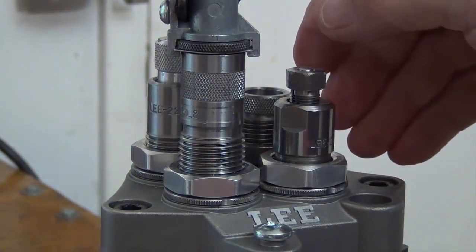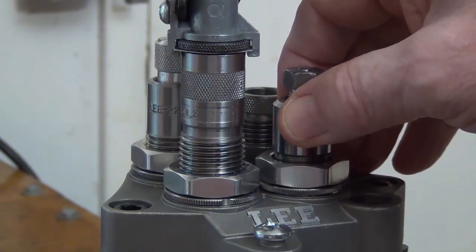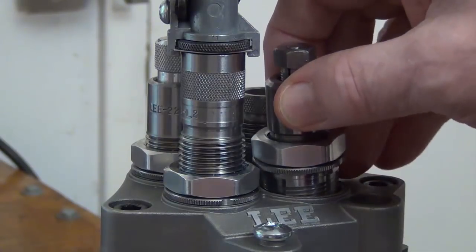The quick change bushings are pretty nice because you can just give a little twist like this and the die and bushing come out.